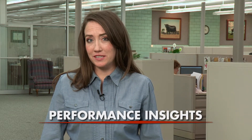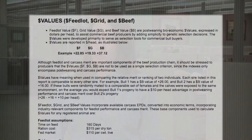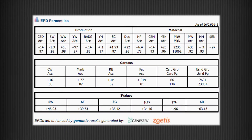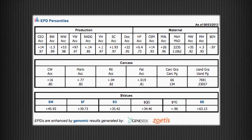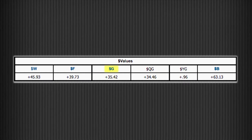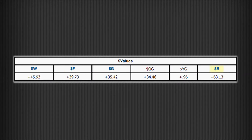The Dollar Value Indexes are multiple trait bio-economic selection indexes that allow breeders to place selection emphasis on more than one trait while looking at only one number. For commercial producers who retain ownership of their cattle through the feed yard or on through the harvest phase, the suite of dollar indexes — dollar F, dollar G, and dollar B — might be of particular interest.